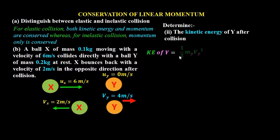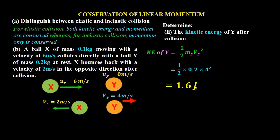The kinetic energy of Y after collision is given by KE = one half times mass times velocity squared. Substituting: one half times mass of Y (0.2 kilograms) times velocity of Y (4 meters per second) squared. Working this out gives 1.6 joules as the kinetic energy of Y after collision.